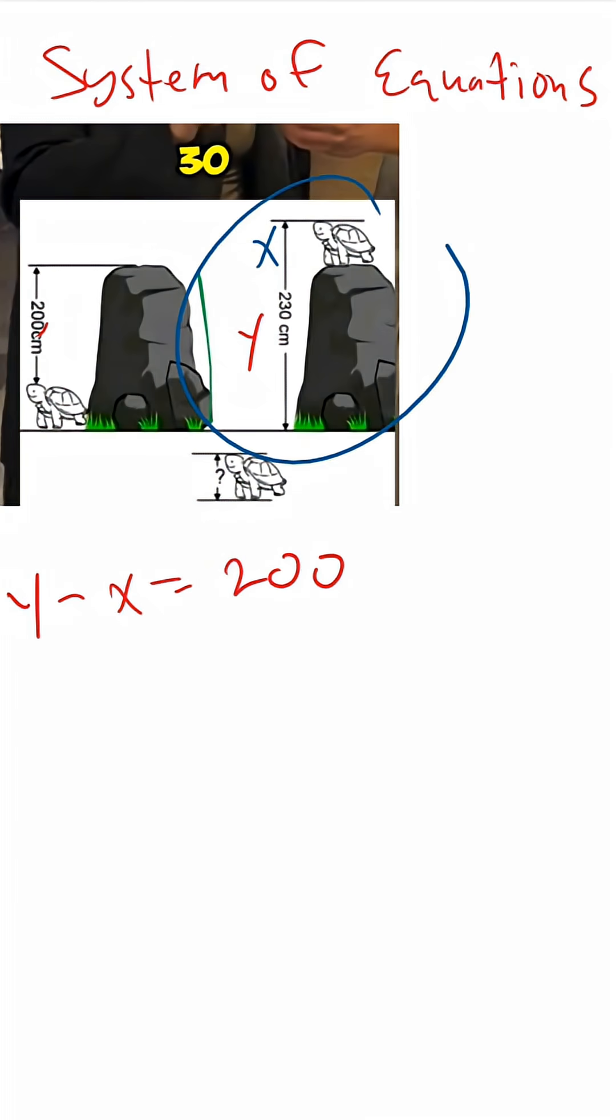So let's continue. Over here in this diagram, we can see that the two heights are actually added together. So the height of the turtle and the height of the rock will give us 230.